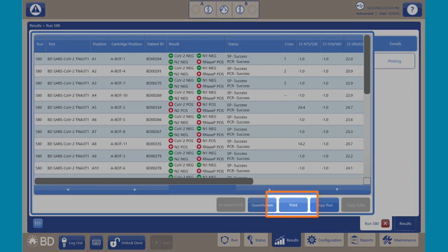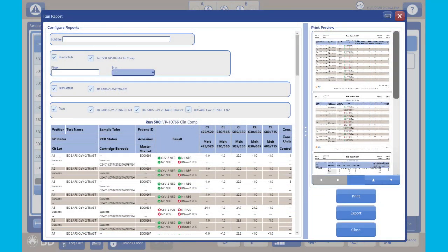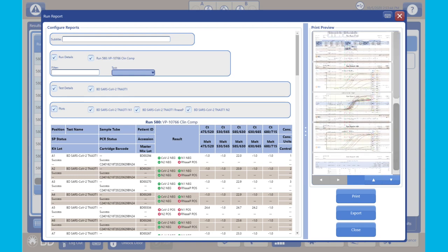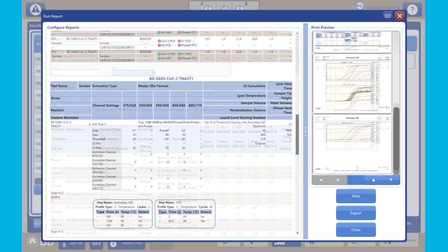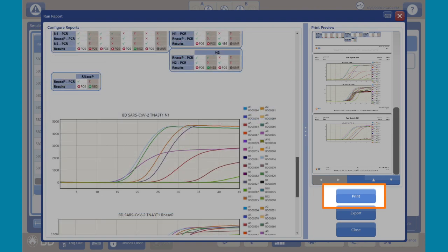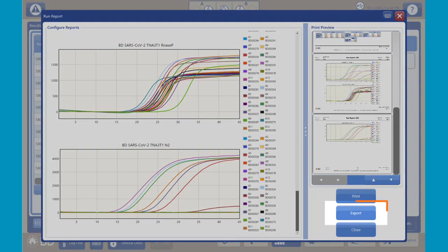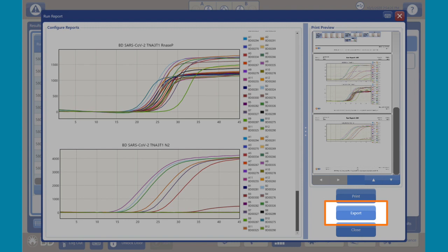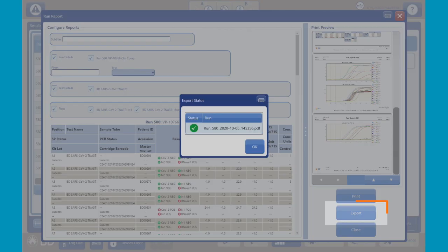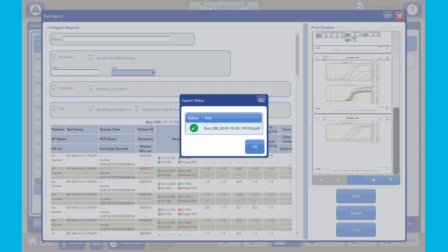To print the results, click the print button. The print preview window of the run report appears. The run report contains a table of detailed results and PCR graphs. To print the report to the default printer, click the print button in the print window. To export the report to a USB thumb drive, click the export button. The export operation exports results to a PDF file of the current run report.